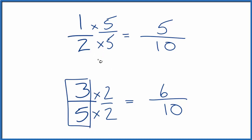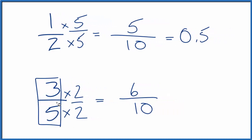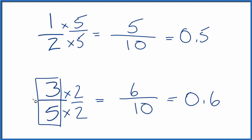We could also convert this to a decimal. 5 divided by 10, or 1 divided by 2, equals 0.5. And 3 divided by 5, or 6 divided by 10, is 0.6. So again you can see 3 fifths is larger than 1 half. If you wanted to know the difference between 1 half and 3 fifths, you could just take 6 tenths minus 5 tenths and you would get 1 tenth — that would be the difference between 1 half and 3 fifths.